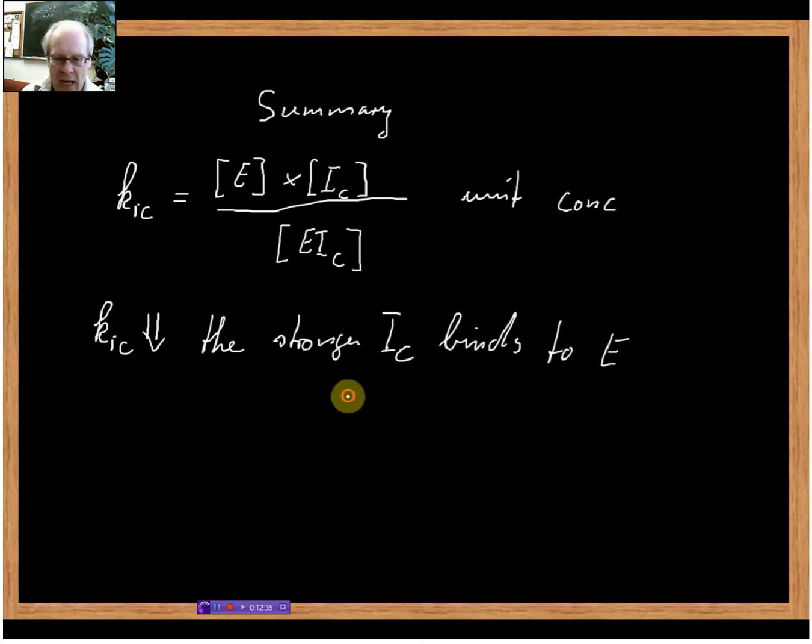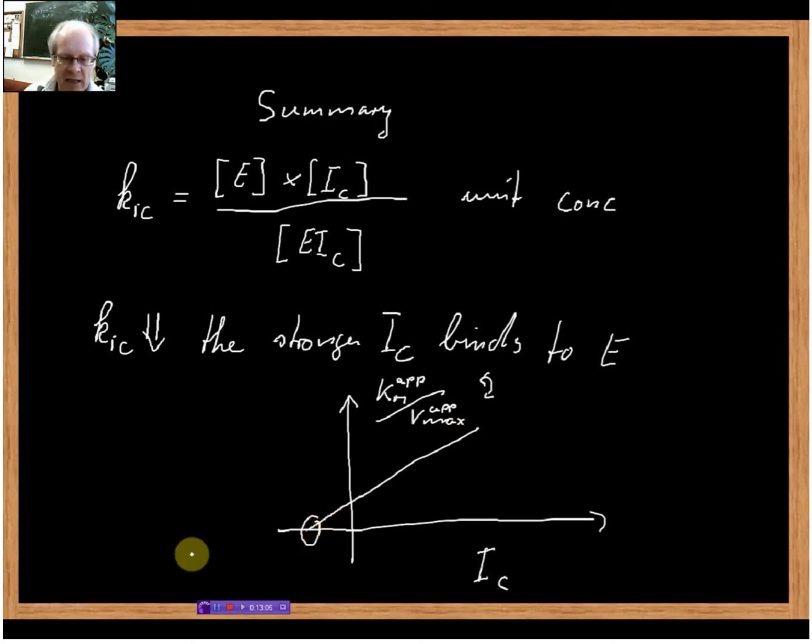We said we can determine KIC if we plot inhibitor concentration on the x-axis and KM up over Vmax up on the y-axis. We need to be careful because that is exactly the opposite to what we measured, but in this case it's because of the maths. We get a straight line, and this point here gives us minus KIC. KIC is always positive.